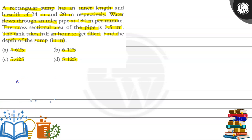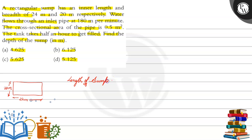इस question में हमें क्या दे रखा है? हमारे पास एक rectangular sump है। इसकी length हमें दे रखी है 24 meter, और breadth हमें दे रखी है 20 meter। तो यहाँ पर हम लिखते हैं: Length of sump को हम बोल देते हैं small l, और यह हमें दे रखे 24 meter। ऐसे ही breadth of sump हम ले लेते हैं small b, और यह हमें दे रखे 20 meter।